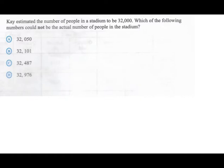K estimated the number of people in a stadium to be thirty-two thousand. Which of the following numbers could not be the actual number of people in the stadium? Again, could not be, and the estimated amount is thirty-two thousand. Remember, ability tests is all about quantitative reasoning, so we're gonna reason again.